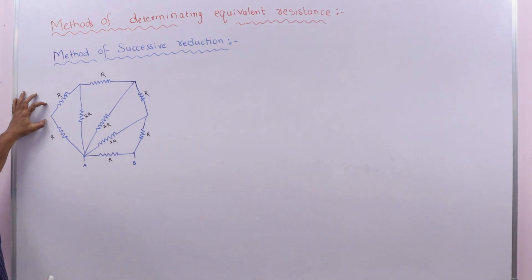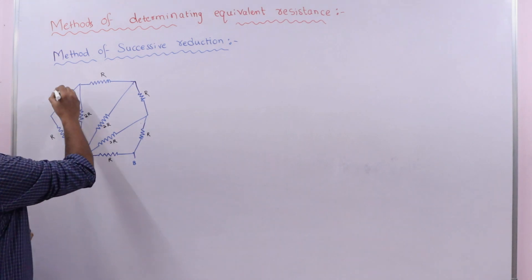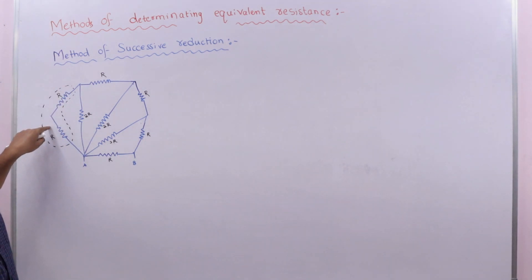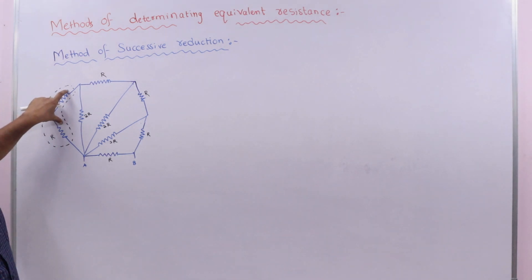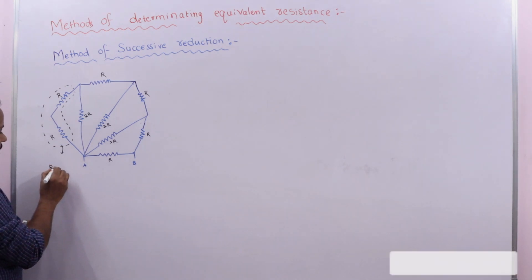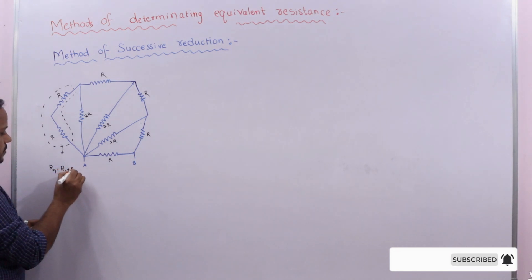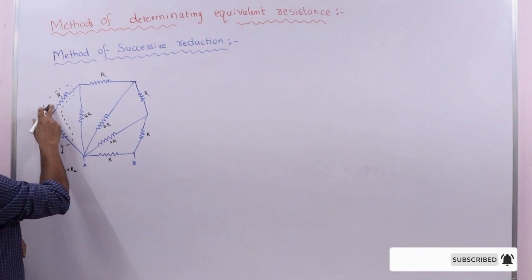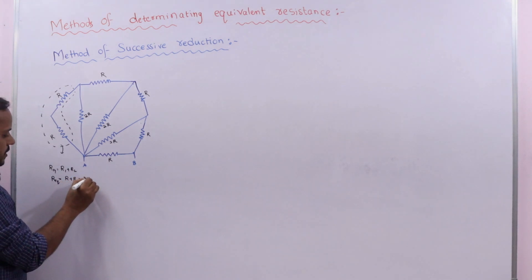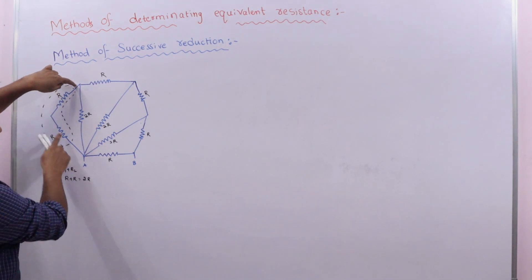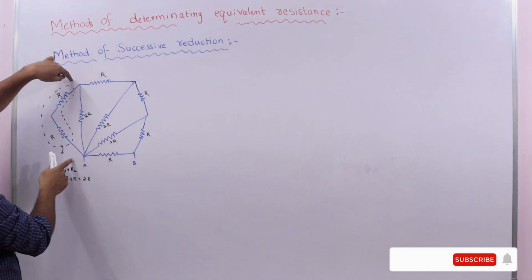From this end, the resistors R and R — shown in dotted lines — are connected in series. These two resistors can be replaced by their equivalent resistance. For series combination, R_eq = R1 + R2. So the equivalent resistance of R and R is R + R = 2R. This 2R replaces those two series resistors.